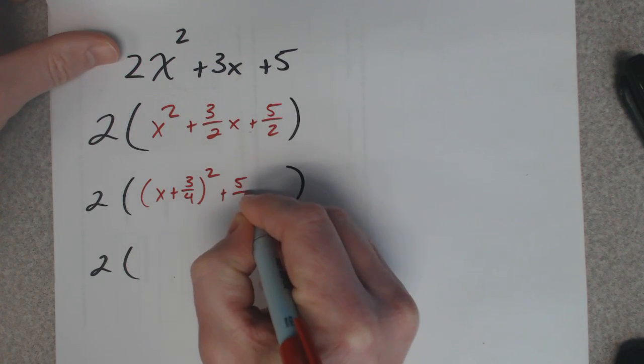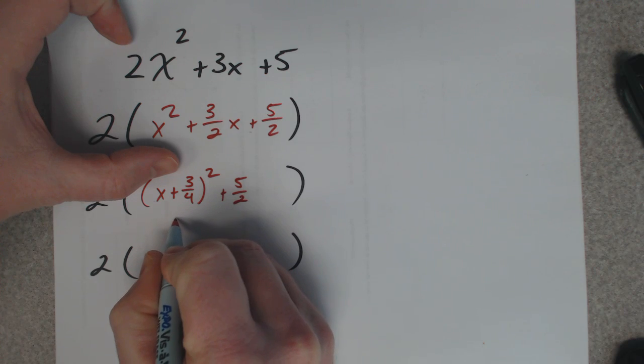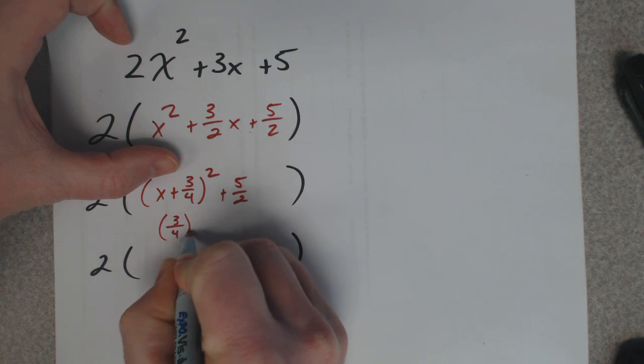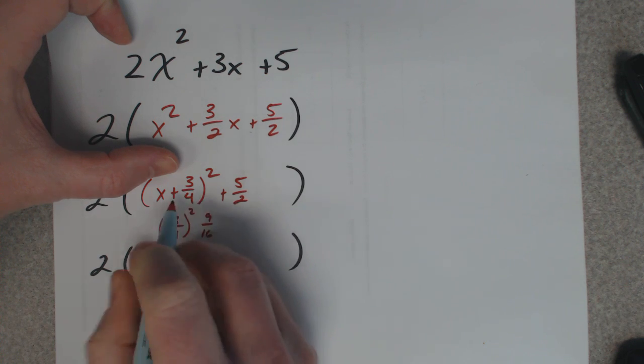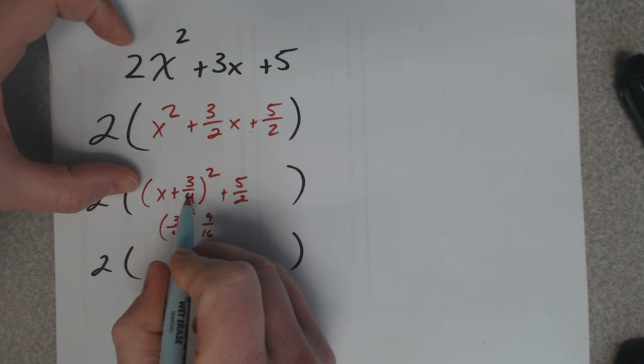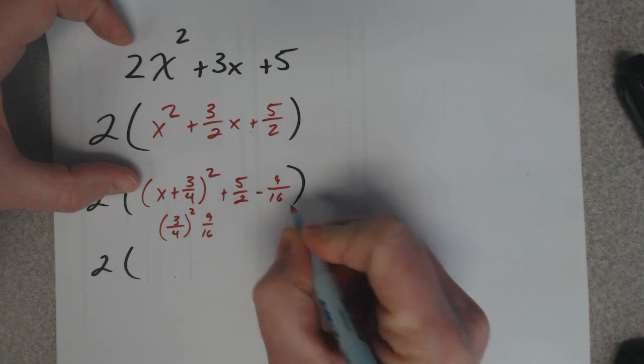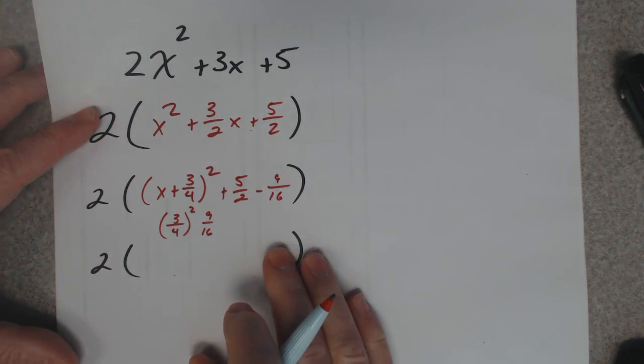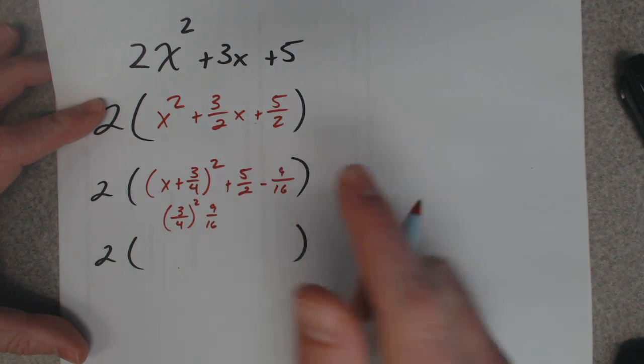Plus 5 halves. But now what's inside here? Well, you square that value. When I square a fraction, I just square the top and I square the bottom. So if I multiply this out, there's a 9 sixteenths in there, so I'm going to subtract 9 sixteenths on the outside to make sure I have everything balanced.